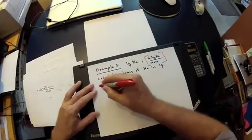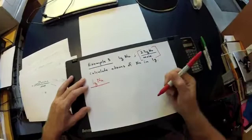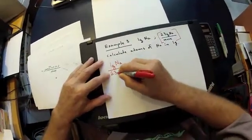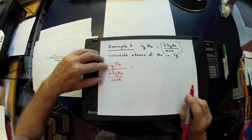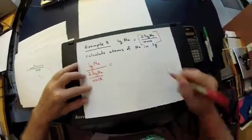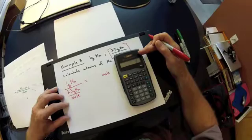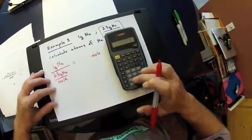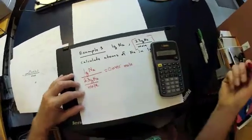Using method one: take 1 gram of sodium and divide by the molar mass. We're taking grams of sodium divided by grams of sodium per mole, so we've solved for moles. Using a calculator, 1 divided by 23 gives approximately 0.0435 moles of Na.